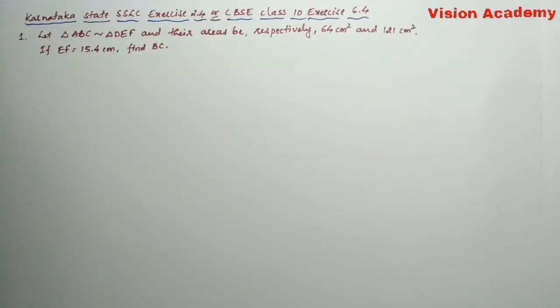Question number 1. Let triangle ABC be similar to triangle DEF and their areas be respectively 64 cm² and 121 cm². If EF is equal to 15.4, find BC.